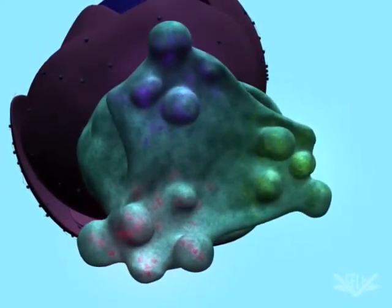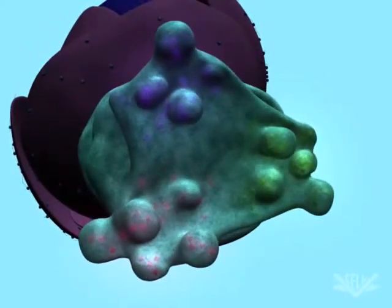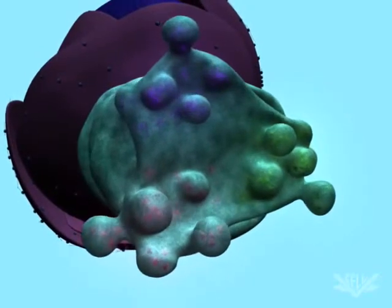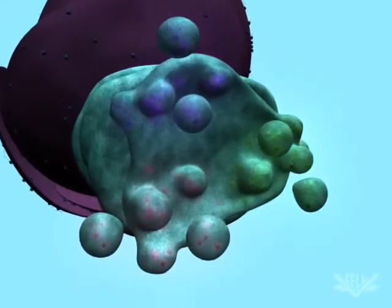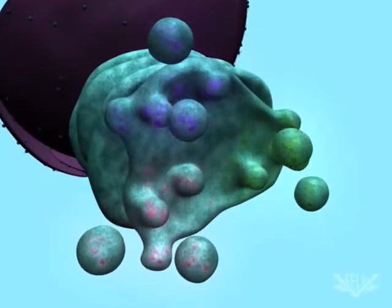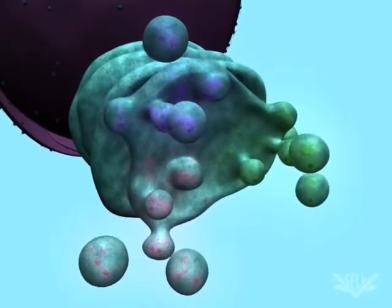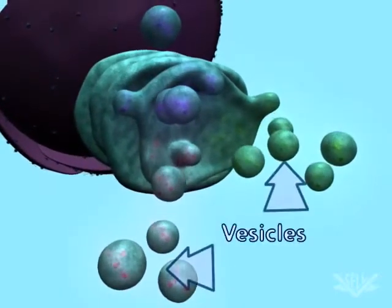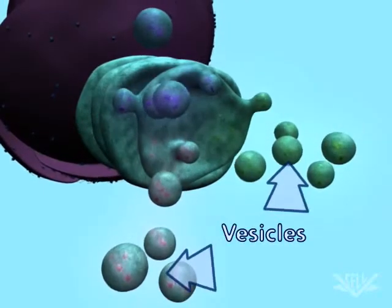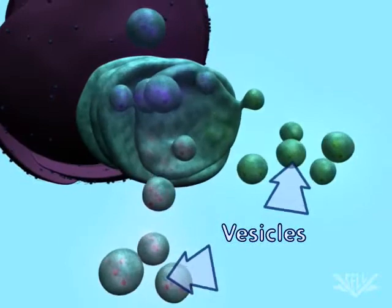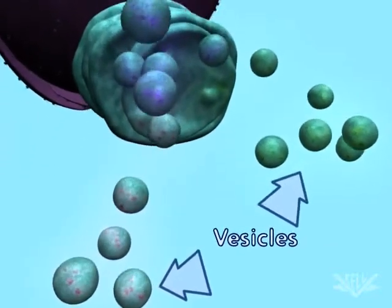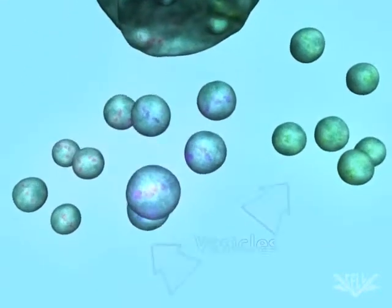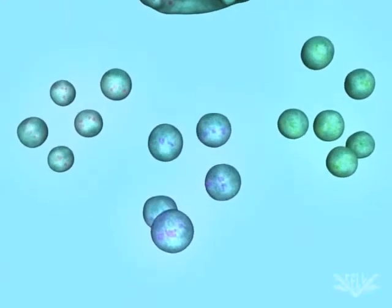These vesicles then migrate to their target location. These locations include internal organelles, such as the lysosome, the digestive organelle of the cell. The vesicles can also be targeted to the cell membrane, where the targeted protein can be released from the cell for delivery elsewhere in the organism.